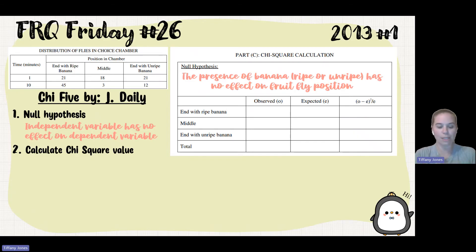That's telling me that every single chamber is going to have an equal number of fruit flies because that banana had no effect on the fruit fly positions.